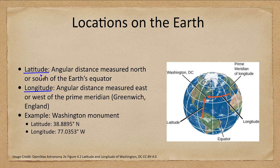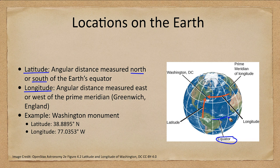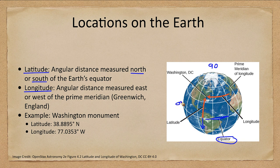Latitude is the angular distance measured north or south of the Earth's equator. The equator is labeled right here, and latitude is how far you are north or south of it. A north latitude is north of the equator, a south latitude is south of it. It goes up to 90 degrees at the pole — the equator is zero degrees, the north pole is 90 degrees north, and the south pole is 90 degrees south.